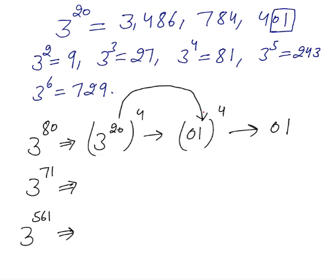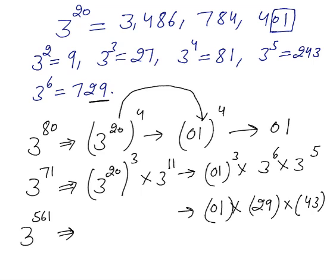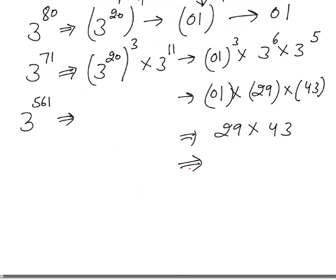For 3^71, this is not a multiple of 20, so we break it as (3^20)^3 × 3^11. Now 3^11 = 3^6 × 3^5. We have 01^3 = 01; 3^6 = 729, so last two digits are 29; 3^5 = 243, so last two digits are 43. Multiplying: 01 × 29 × 43. We get 29 × 43, and the last two digits of the product are 47. So 3^71 has last two digits 47.